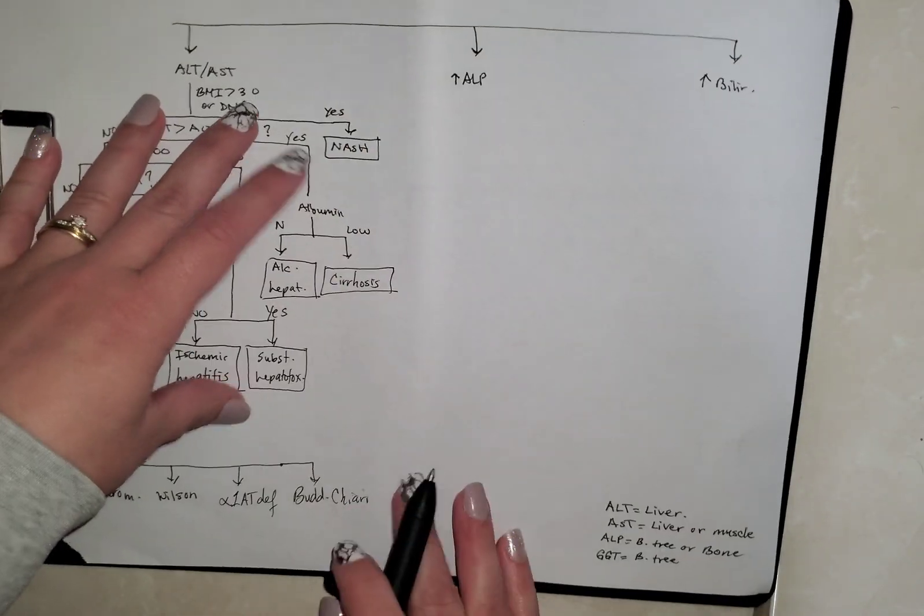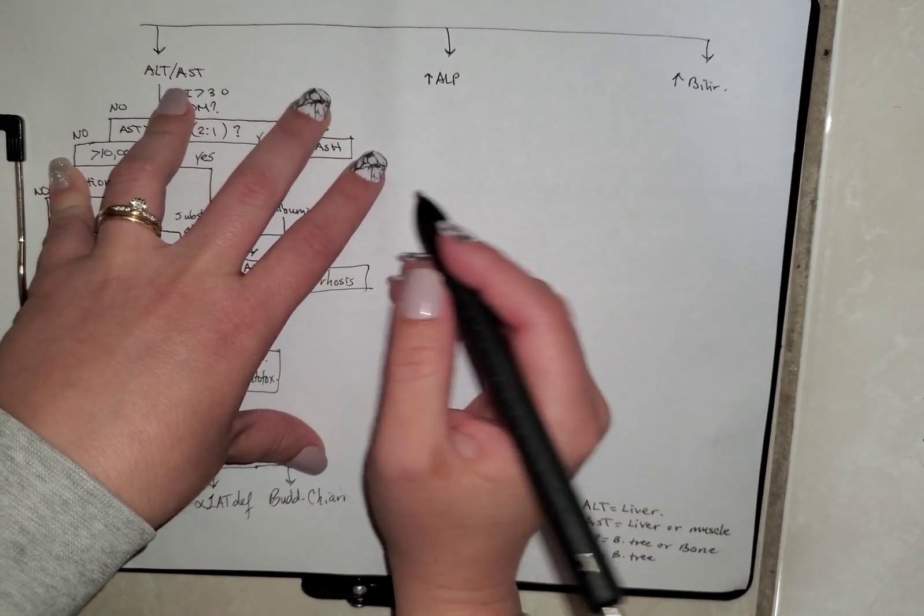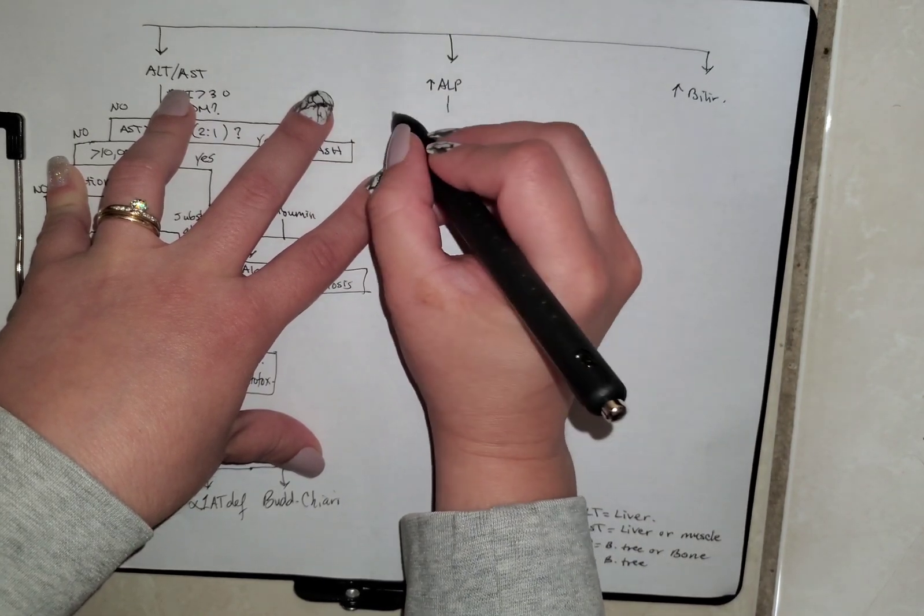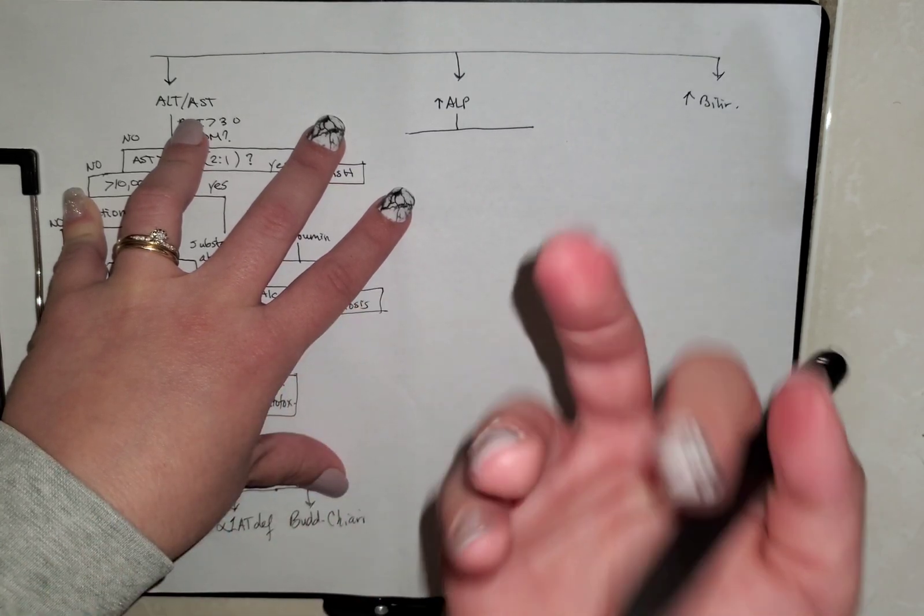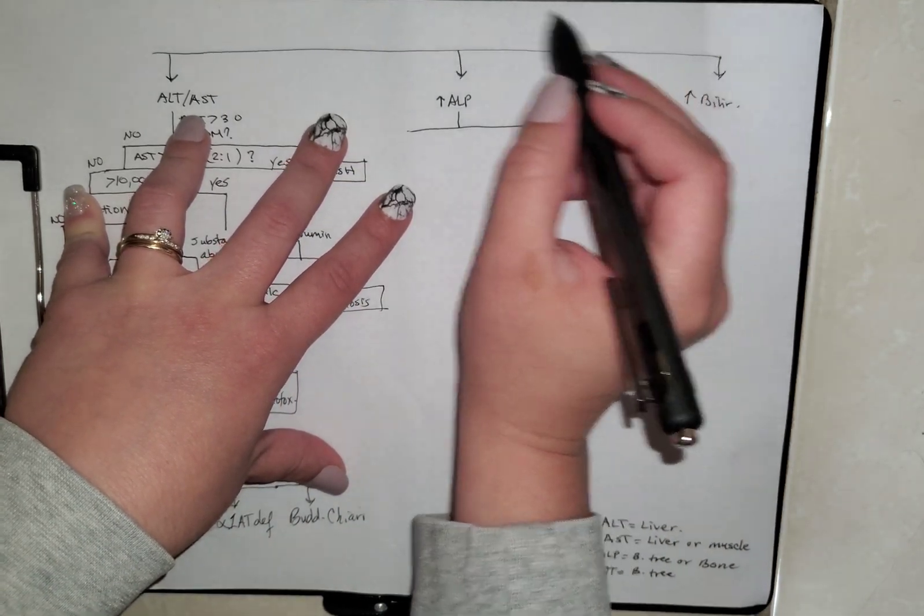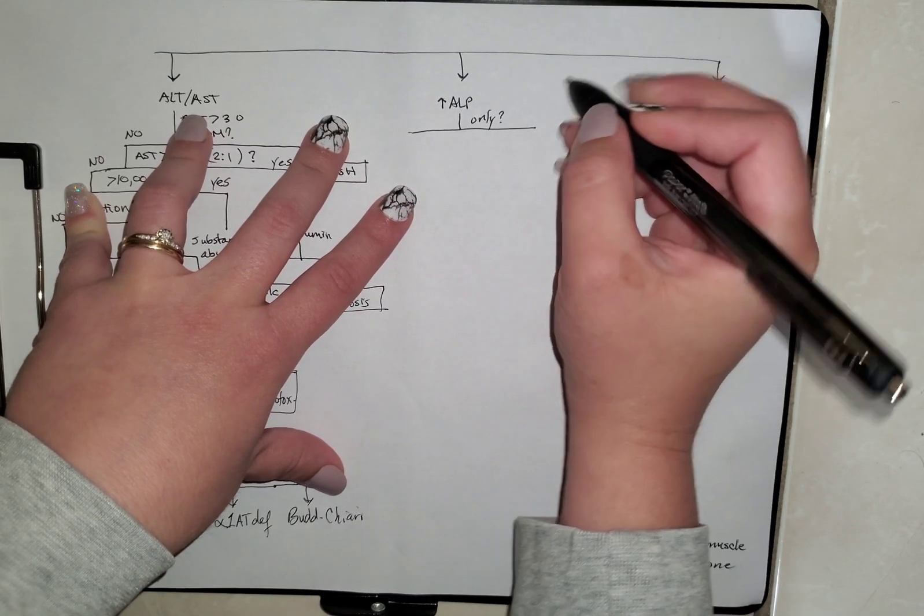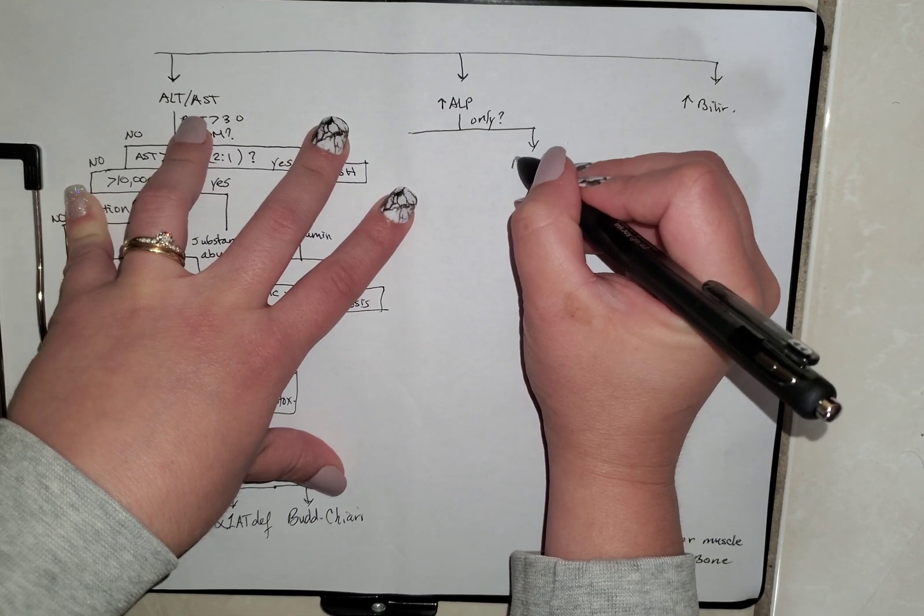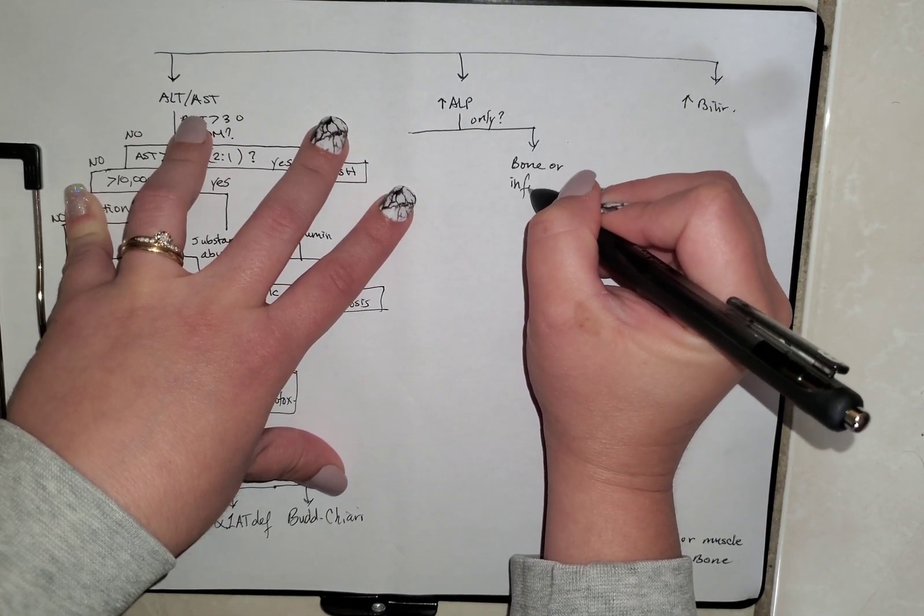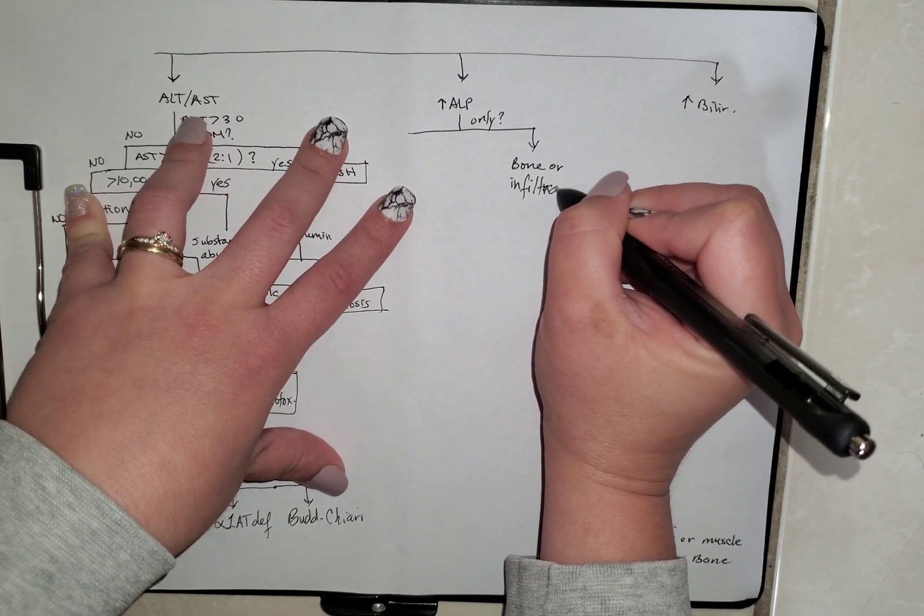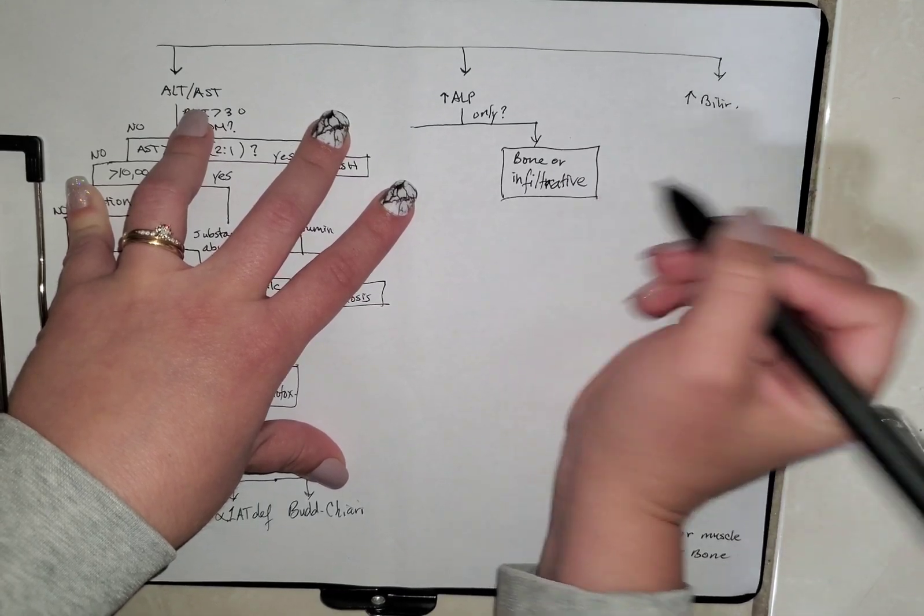Now, this is done. Let's go to increase ALP. As we said, it's mostly going to be biliary tree. But first, we need to evaluate, is the only thing elevated the ALP or mostly elevated ALP with barely any ALT-AST? So if it's pretty much only this, we're going to assume it's either a bone problem or infiltrative cancer, sarcoidosis, amyloidosis, multiple things.